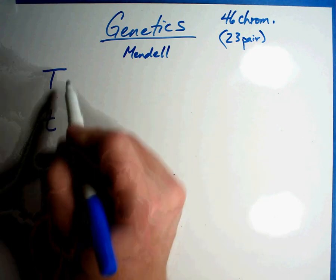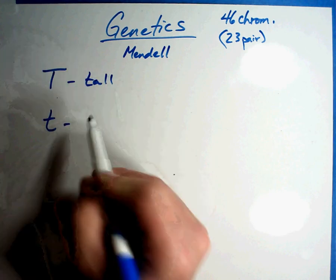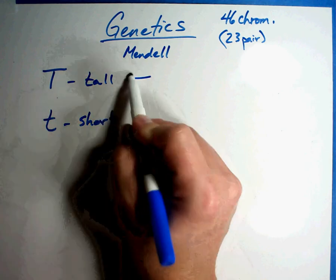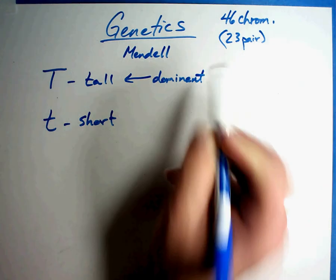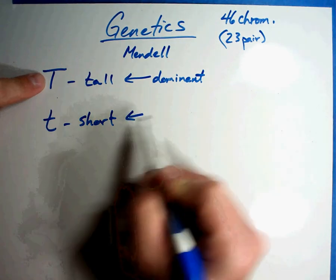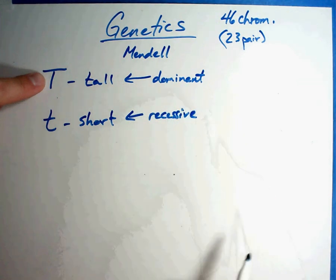Let's say for example a big T stands for a tall plant and a little t stands for a short plant. First couple of definitions. This is what is called the dominant gene. The dominant means it dominates. Whenever it's located there, that's what you're going to see. This is what is called the recessive gene. It is sort of the hidden gene. You may not see it every single time.